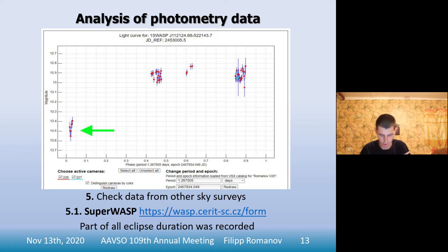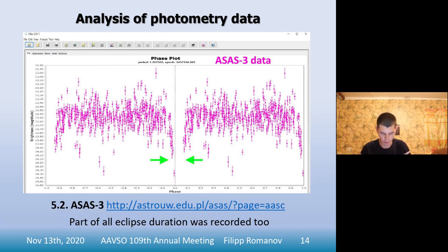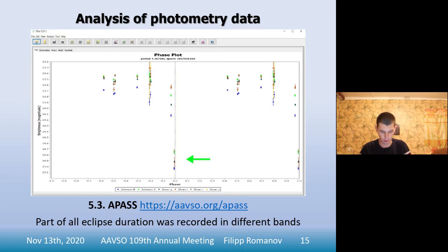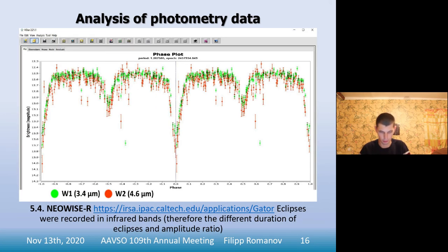Next, I checked the photometric data for the star from other sky surveys. Part of the primary eclipse duration was recorded in the SuperWASP data. In the ASAS3 data, the eclipse is clearly visible as a gap in the phase plot. In the ASAS3 epoch photometric data, the eclipse was recorded in different bands. Finally, in the ASAS-SN data, both eclipses were recorded very well. In the phase plot you can see different duration of the eclipses and amplitude ratio because of the infrared bands.